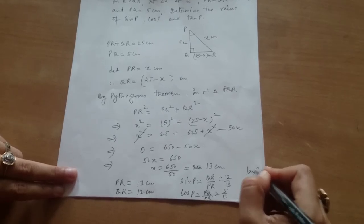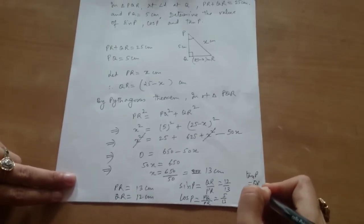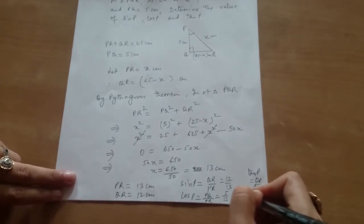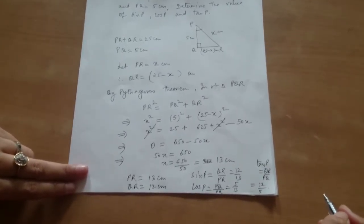Tan P will be QR by PQ, which equals 12 by 5. Good job.